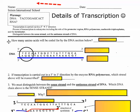Take a look at question one: how many amino acids will be coded for by the DNA section below? If you remember, one amino acid is coded for by one codon, and one codon is three bases. Can you pause and count them up really quick?